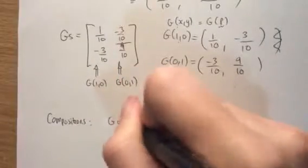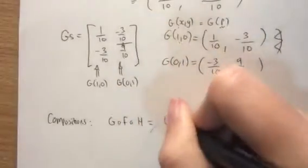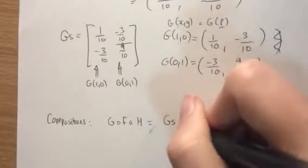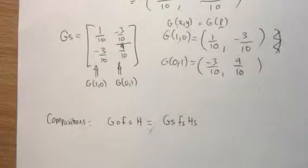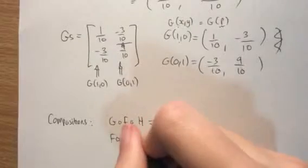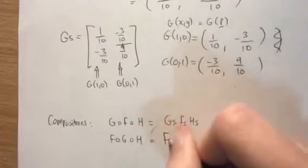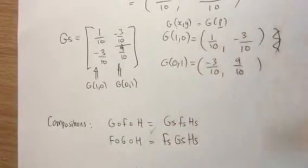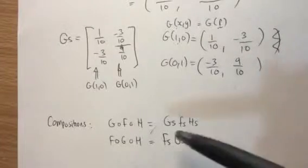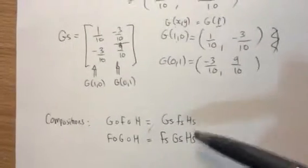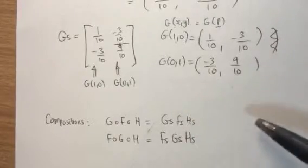So if we want to work out G of F of H, for example, take the standard matrix of G in our calculator. Multiply it by a standard matrix of F. Multiply it by a standard matrix of H. If we want to find the F of G of H, for example, it would be F of S, G of S, H of S. And you could do it for any other possible combination. You just need to find the standard matrices and then multiply them together.